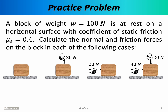This practice problem involves both the normal force and friction. A block of weight 100 newtons is at rest on a horizontal surface with a coefficient of static friction of 0.4. We calculate normal and friction forces for four scenarios. In the first scenario, the block simply sits on the surface. Weight pulls it down; the normal force reacts with 100 newtons pointing upward. There are no horizontal forces, so friction has nothing to react to — the force of static friction is zero newtons.